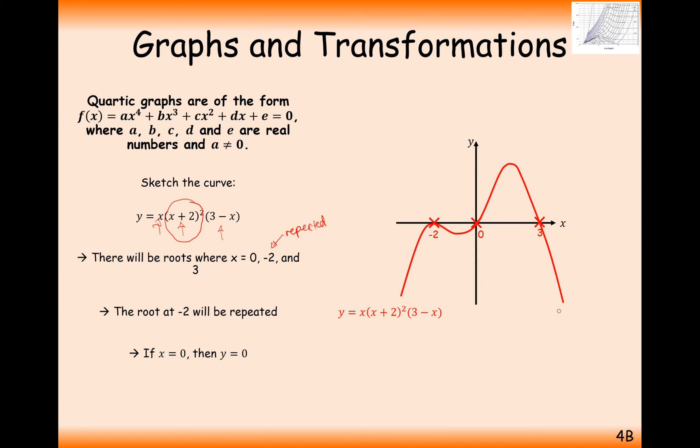Now the reason it's upside down in this case here is because if you look at how we would expand to get the x to the power of 4 term, we're going to get x times x-squared times minus x, so this is going to give us a minus x to the 4. So always check to see which way up your graph is going to be by, in your head, expanding the x to the 4 term to see whether you get a positive x to the 4 or a negative x to the 4.